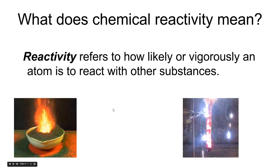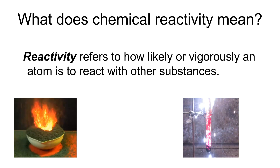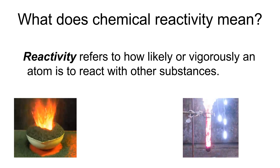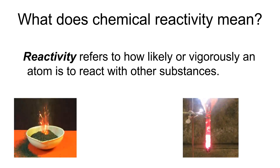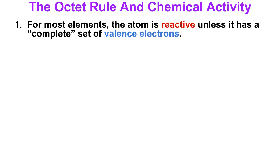Today we're going to be talking about chemical reactivity. Reactivity refers to how likely or how vigorously an atom will react with another substance. Get out a fresh piece of paper and write the title: the octet rule and chemical activity. Our first note says: for most elements, the atom is reactive unless it has a complete set of valence electrons.